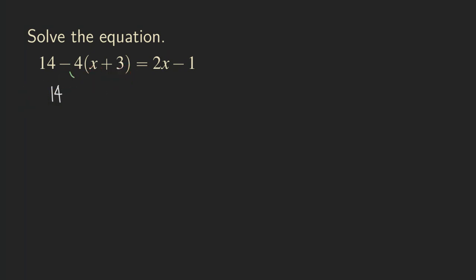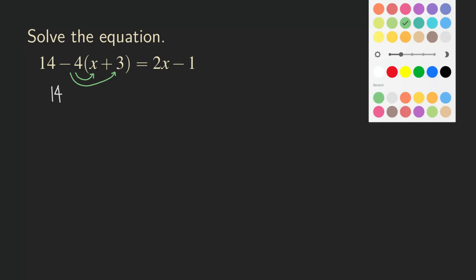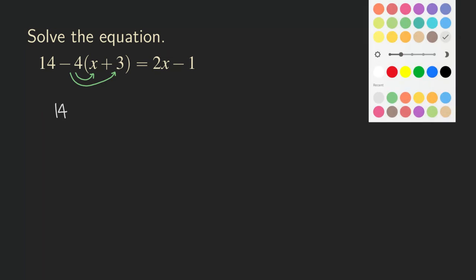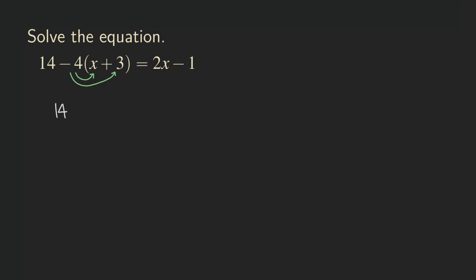So we are going to do this distribution here. Negative 4 to the x, and then negative 4 to the positive 3 also. So we are going to get minus 4x.